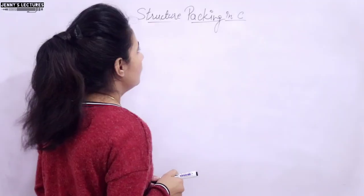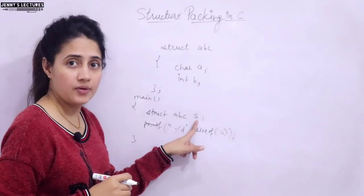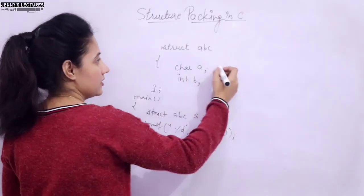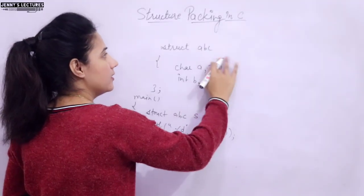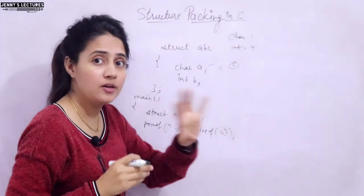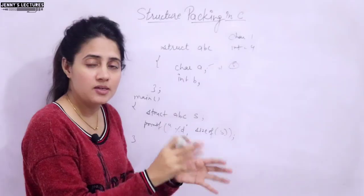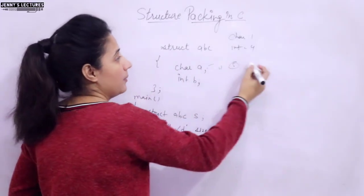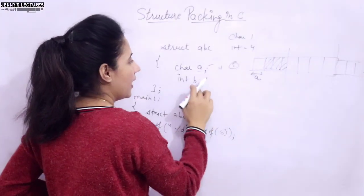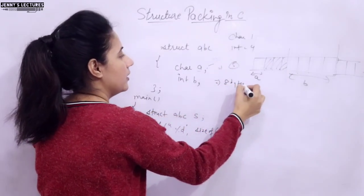Now let's see what structure packing is. I'll write down the example from the previous video. The struct has members char A and int B. What would be the size of variable S? You might say 5 bytes — char takes 1 byte and int takes 4 bytes — but with structure padding, the compiler automatically inserts padding bytes for data alignment. The memory is aligned as: 1 byte for A, 3 padding bytes, then 4 bytes for B, giving a total of 8 bytes.